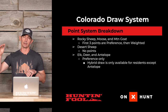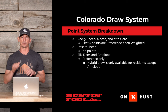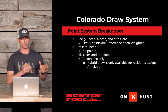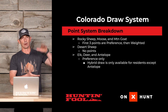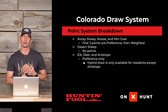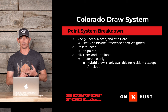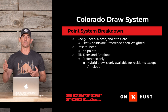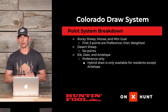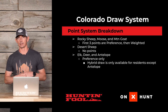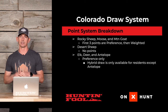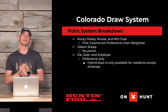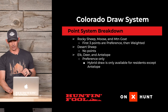For elk, deer, and antelope it's 100 percent preference — the applicant with the highest points gets the tag, with no random draw component for those species. Colorado did introduce a hybrid draw years ago, which sets aside a certain percentage of tags to be drawn randomly for remaining applicants. However, for deer and elk that hybrid draw does not apply to non-residents, because the non-resident quota is already filled by the time the random portion runs. For antelope, which has no quota, a few non-residents have drawn tags through the hybrid draw, though it's not something to count on.